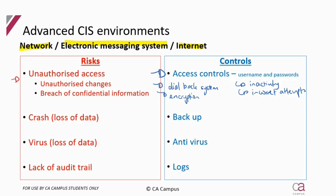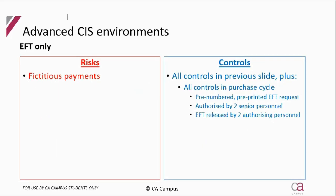They can also encrypt data, which is having a password on the data that is moving through that system or channel, so only the authorized person who has that password can access that data. A very general and important control for the internet is to have firewalls - another security measure to ensure only authorized personnel gain access. Standard risks include system crashes and data loss, which backups address - remember we need three generations and the latest copy off-site. Antivirus addresses viruses, and logs address the lack of an audit trail.